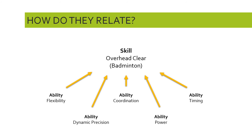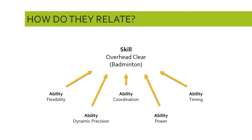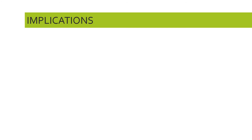The point is that we can conceive of an ability as being the building blocks of a skill. Abilities are building blocks for skills; the skills themselves have to be learned, and we make use of our innate abilities, combining them in certain ways, to produce and then continue to hone a skill. That's how abilities and skills relate to one another.